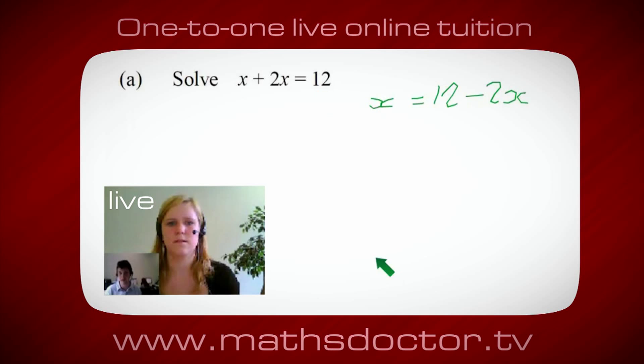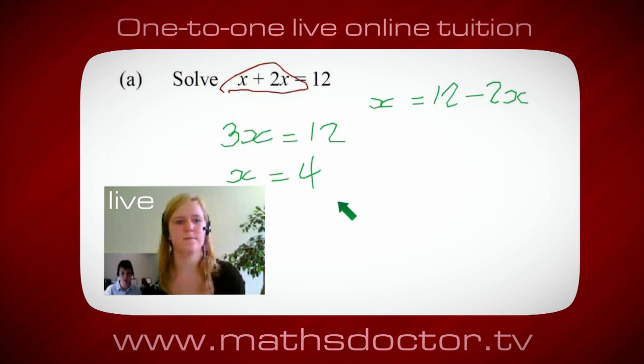OK, so a lot of the time we want to get x by itself, but what we want to do first is get all of these x's together. So can you see anything we can do with this? Get all these together in one place. Oh OK, it's 3x isn't it? Yeah, absolutely. So 3x equals 12. Oh, and so x equals 4. Brilliant, spot on, well done.